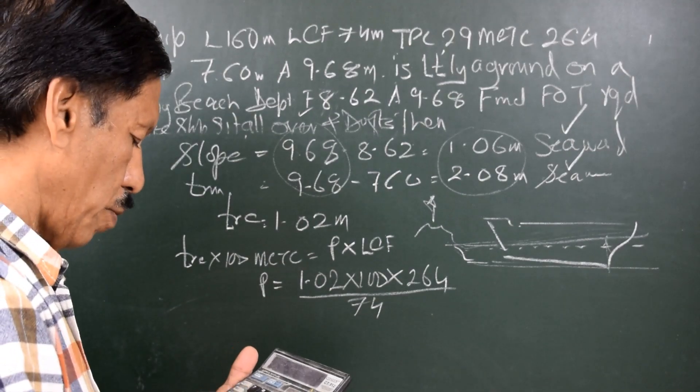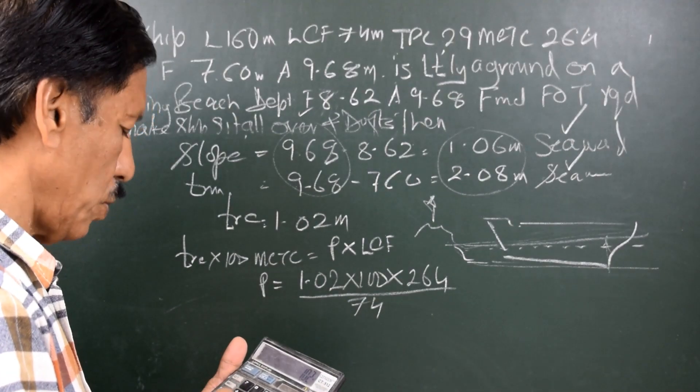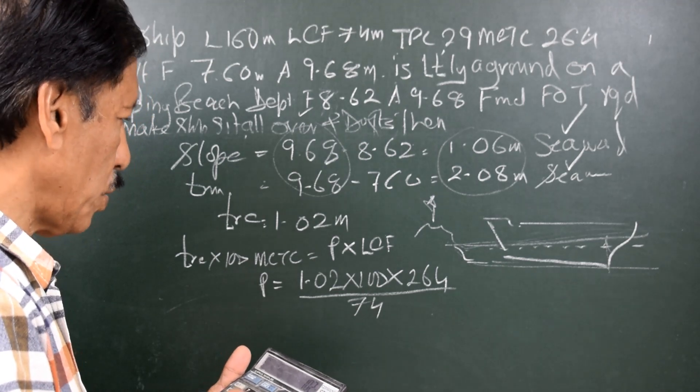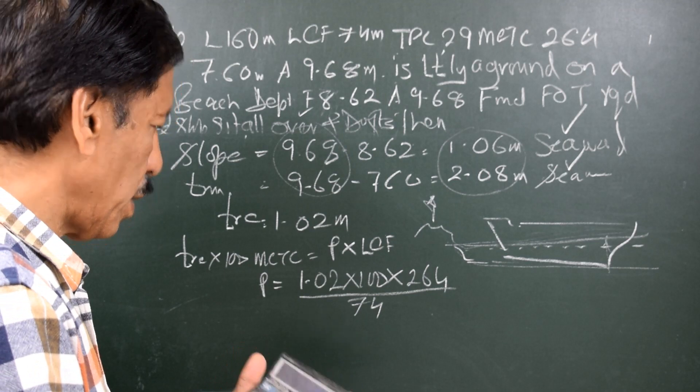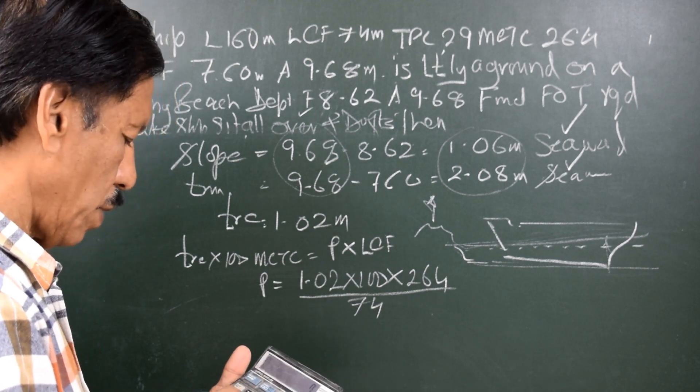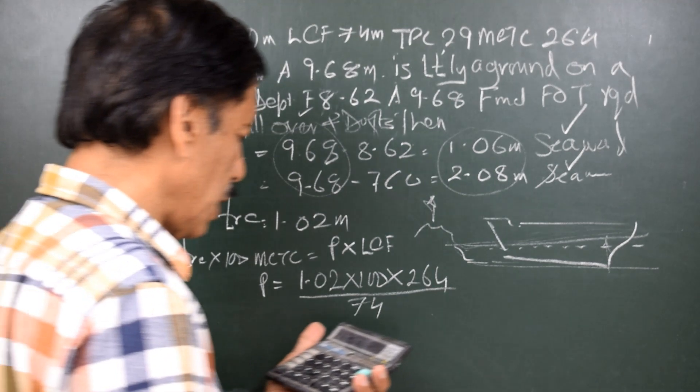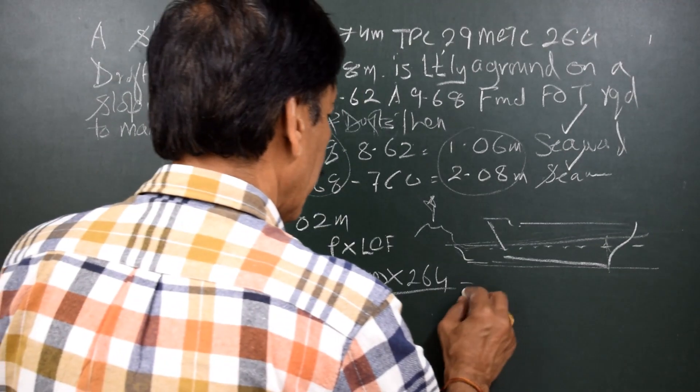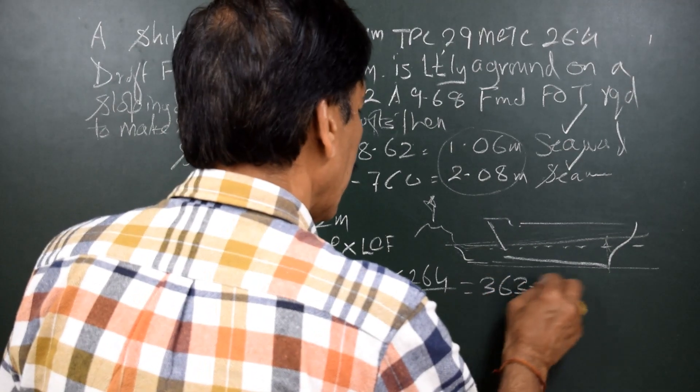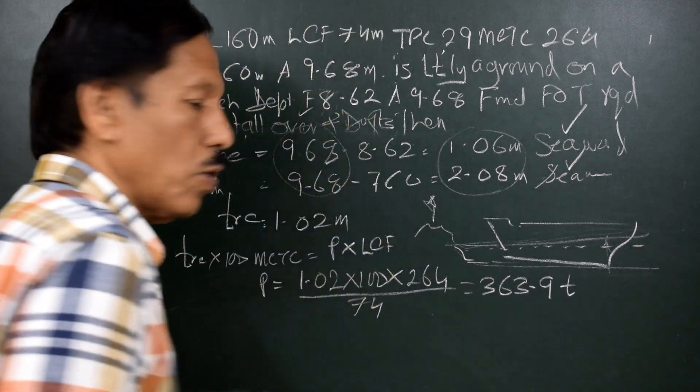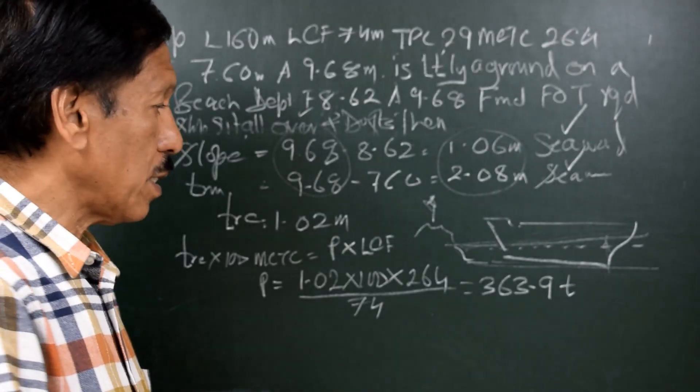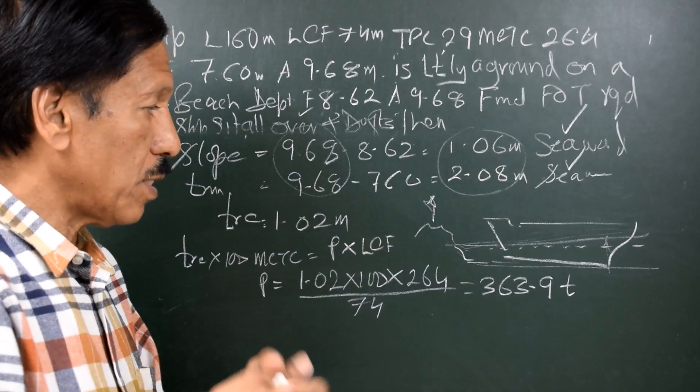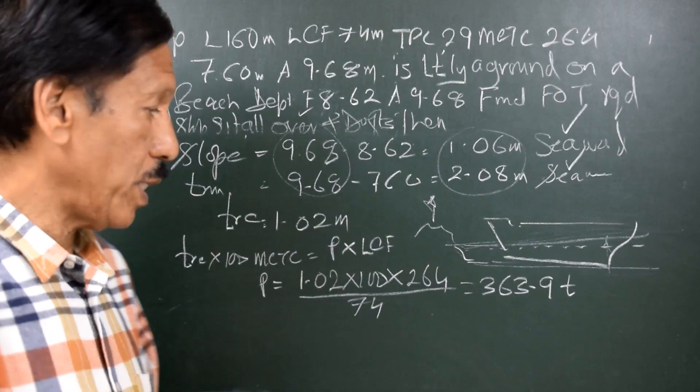So let's see how much it is: 1.02 into 100 into 264 divided by 74 gives me 363.9 tons. So much of upthrust is required at aft point so that the trim change of the ship will be 1.02 meters.